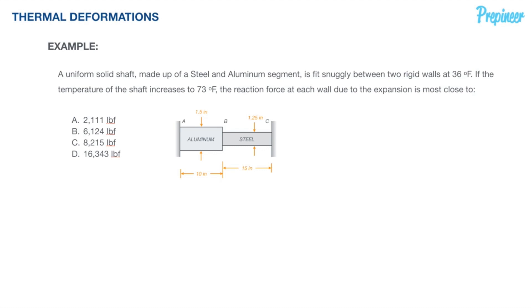This problem states a uniform solid shaft made up of steel and an aluminum segment is fit snugly between two rigid walls at 36 degrees Fahrenheit. If the temperature of the shaft increases to 73 degrees Fahrenheit, the reaction force at each wall due to the expansion is most close to what?